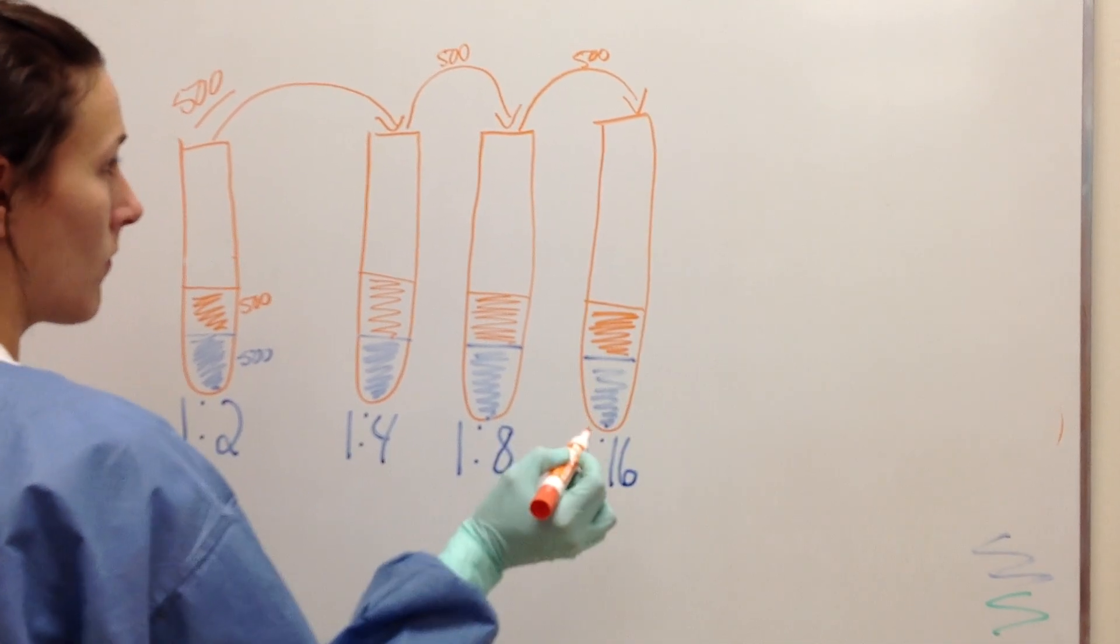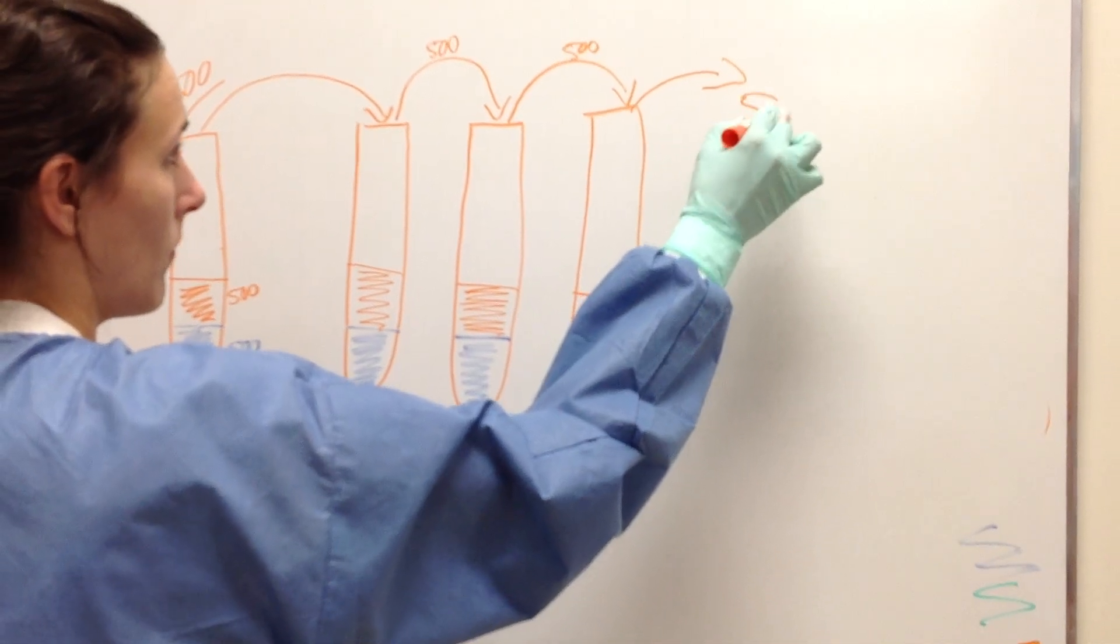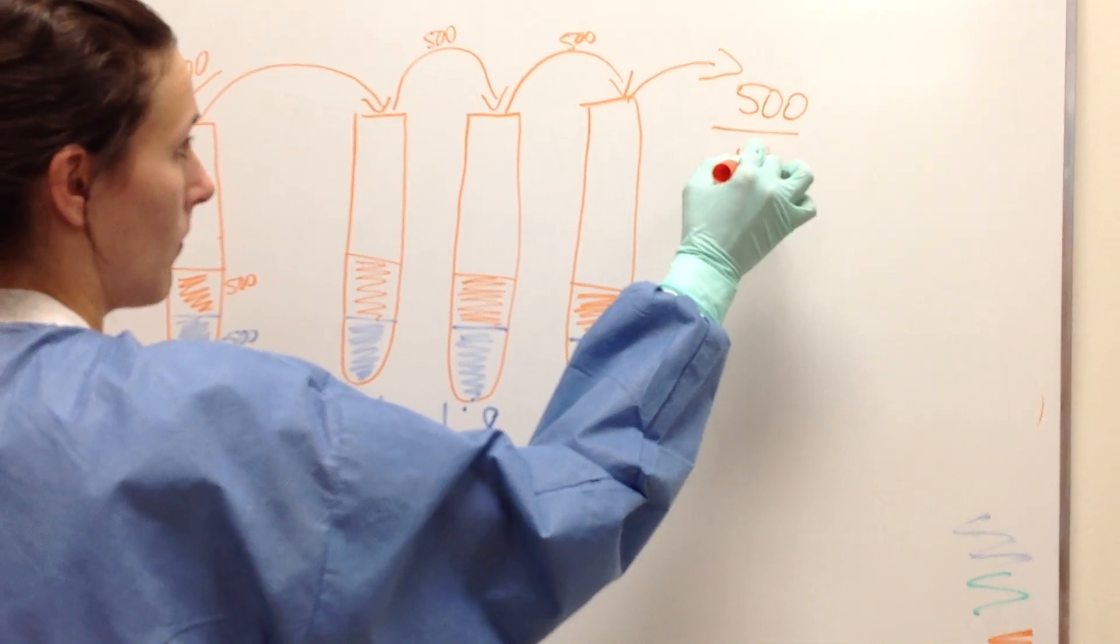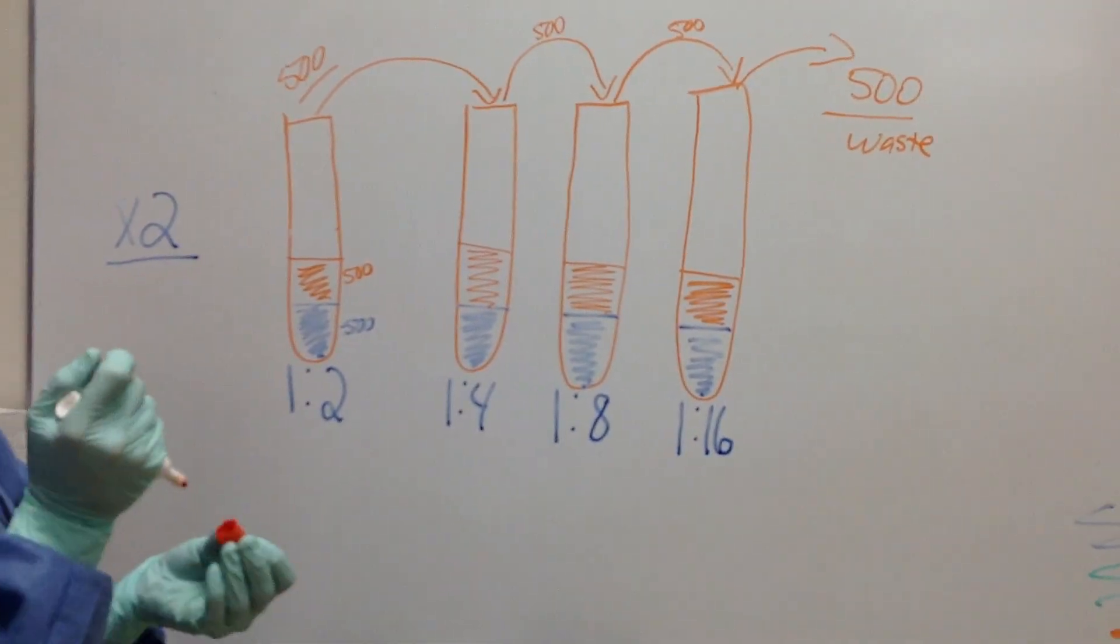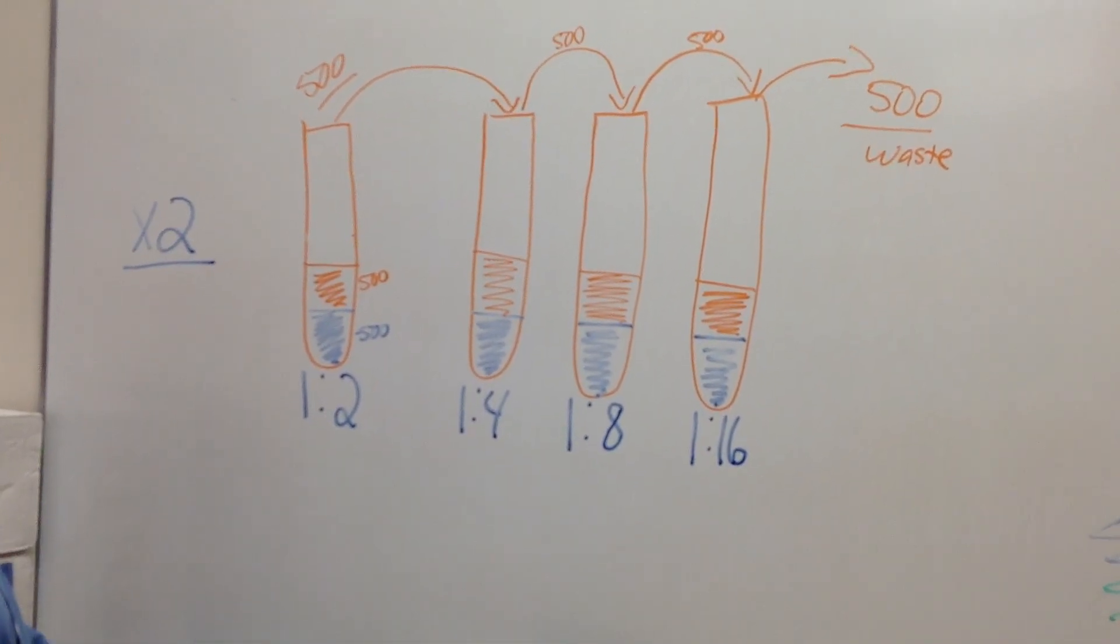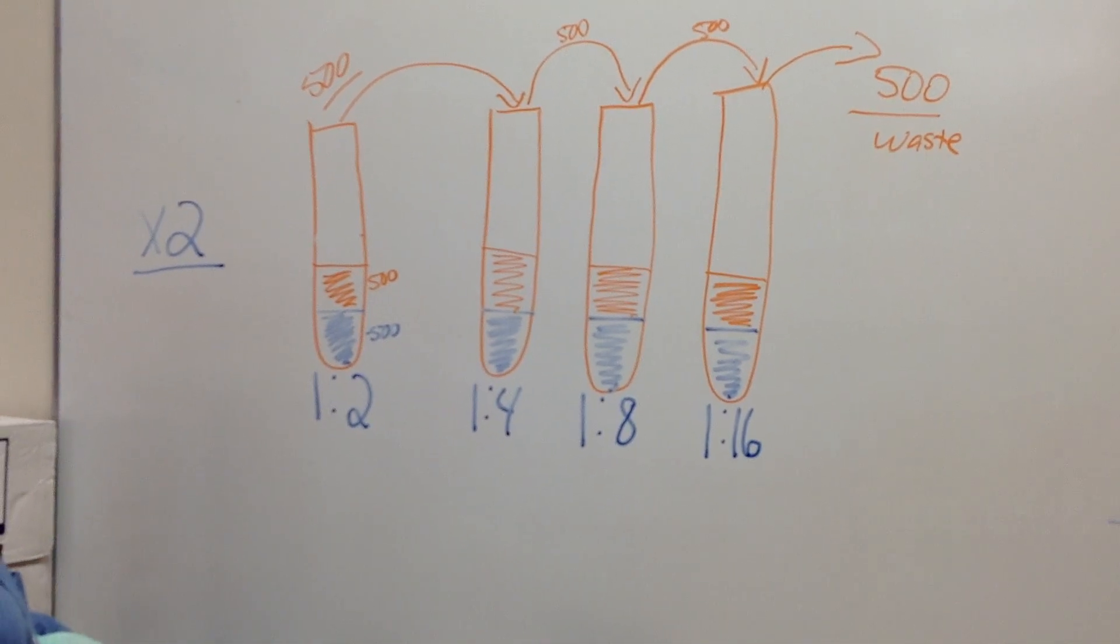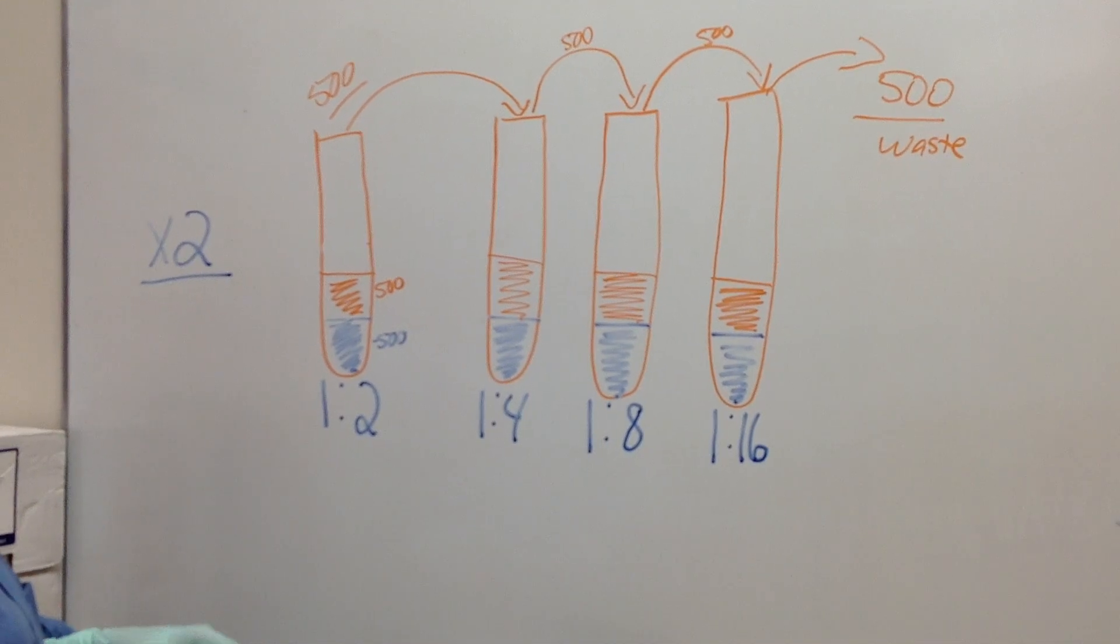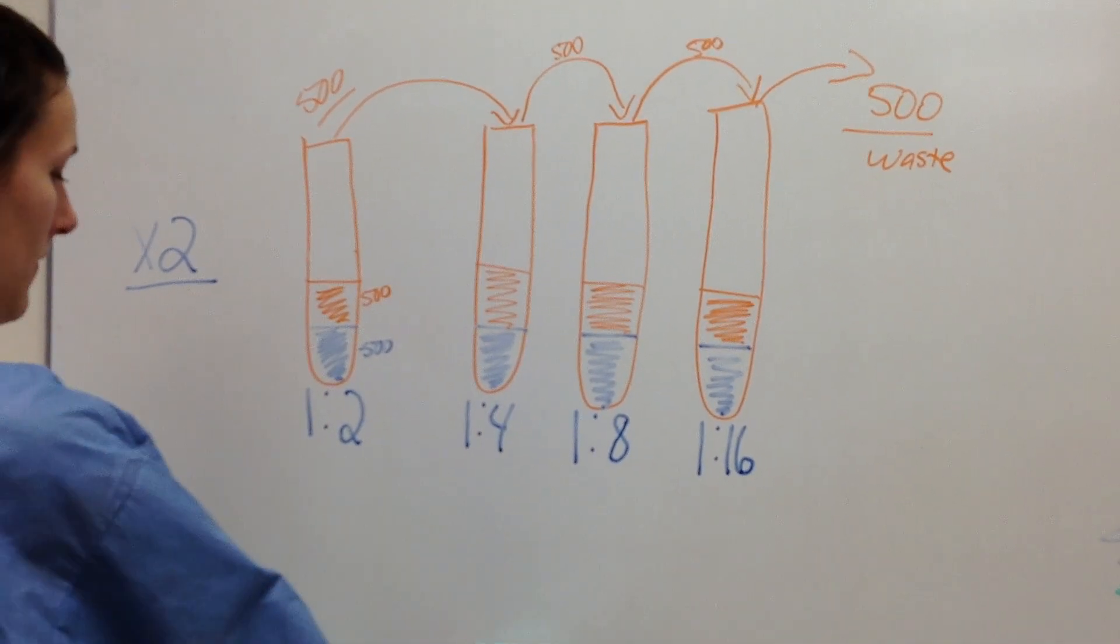Mix and then pull out 500. And we will discard this because we don't want to go any further. There are times you may need to continue. So after we've pulled out 500 microliters from every tube, we should end up with a total volume of 500 microliters. Now let's go to the bench and practice this technique.